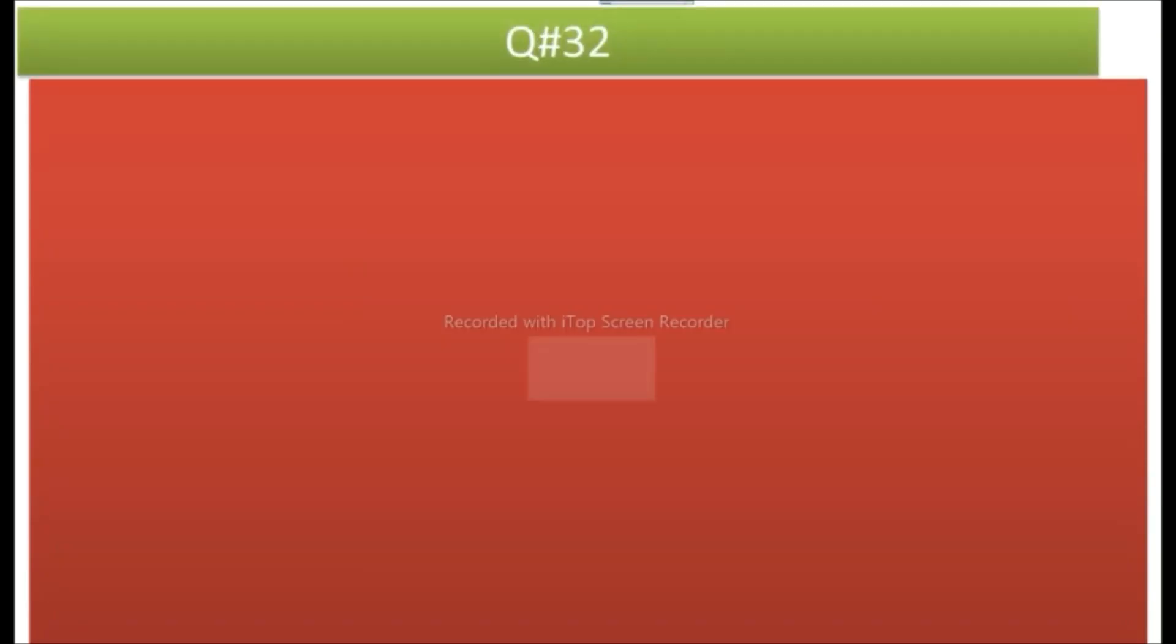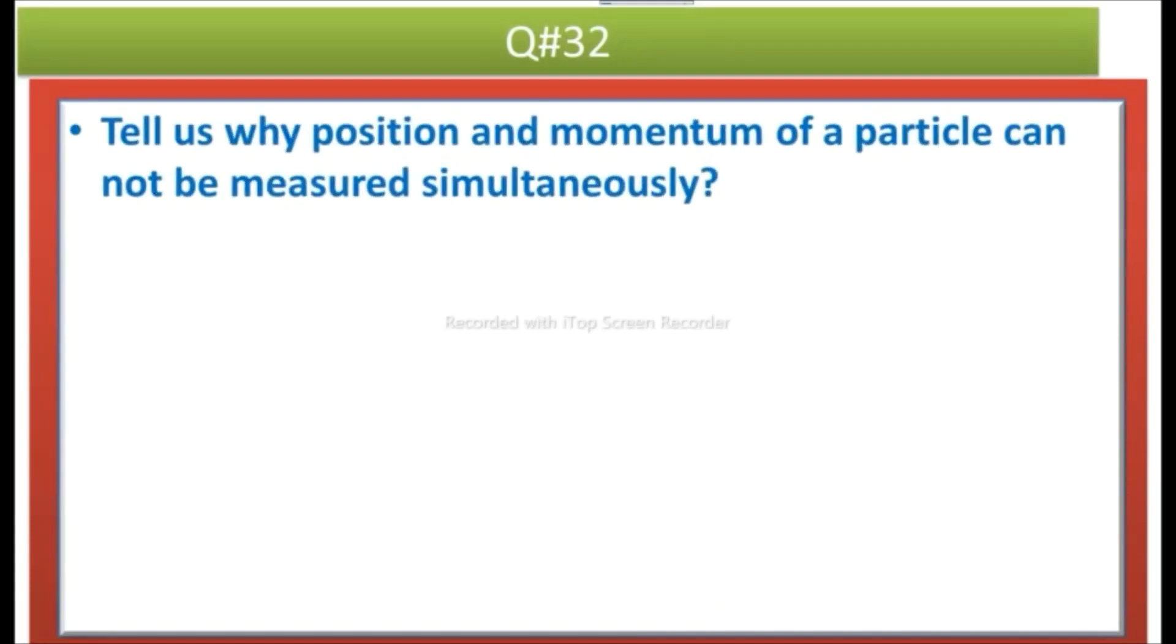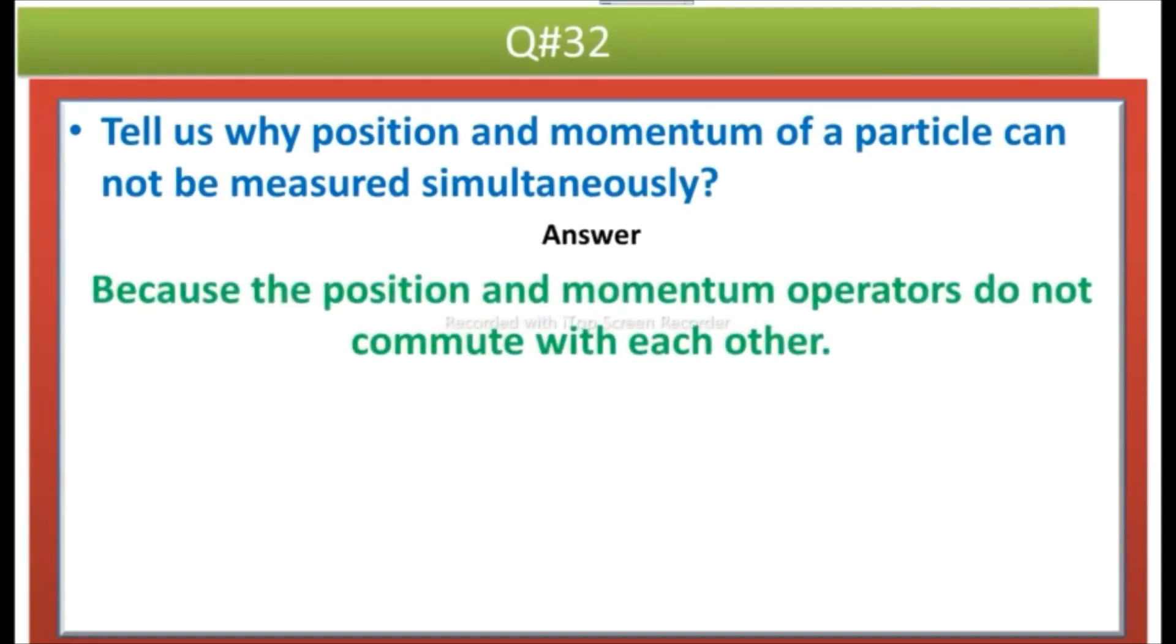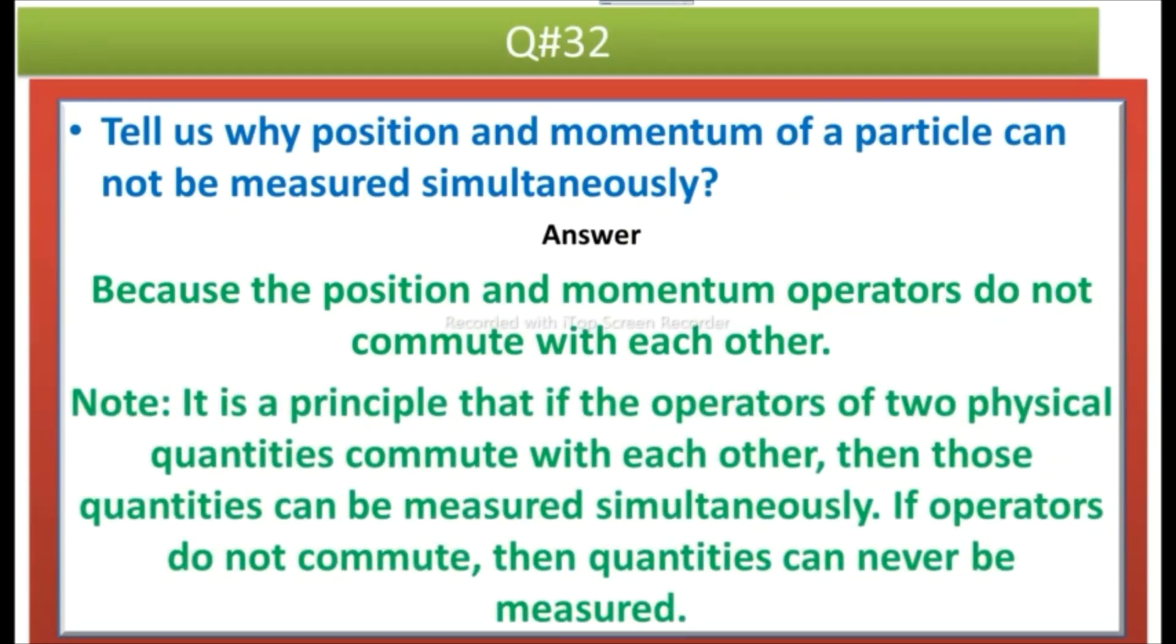The next question is Tell us why position and momentum of a particle cannot be measured simultaneously? Answer is Because the position and momentum operators do not commute with each other. Note it is a principle that if the operators of two physical quantities commute with each other, then those quantities can be measured simultaneously. And similarly, if operators do not commute with each other, then those quantities can never be measured simultaneously.